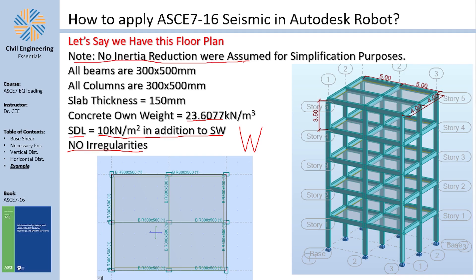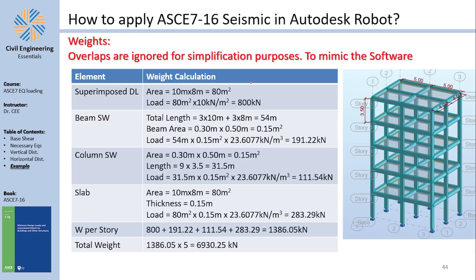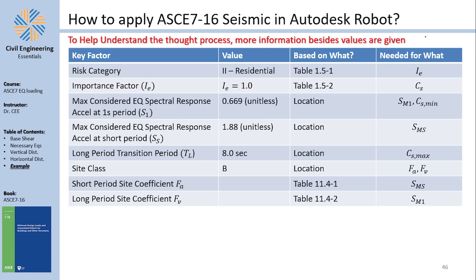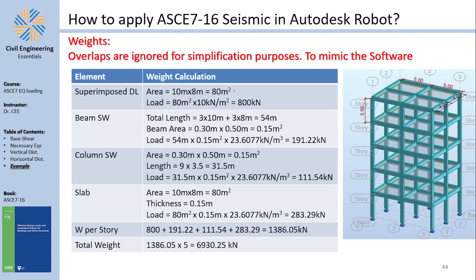I am not assuming any inertia reduction because I want to calculate by hand, but in reality you should apply inertia reduction — for beams it is 0.35 and for columns it is 0.7. This video might serve as your guideline for using ASCE 7, and to help you I have prepared a table showing what I'm calculating, the value found, based on what reference, and why I need it.